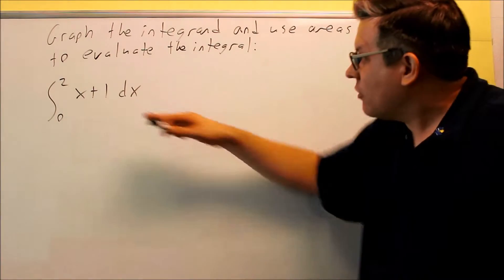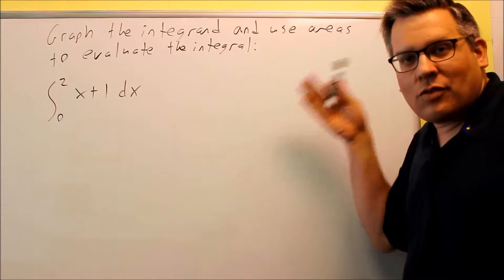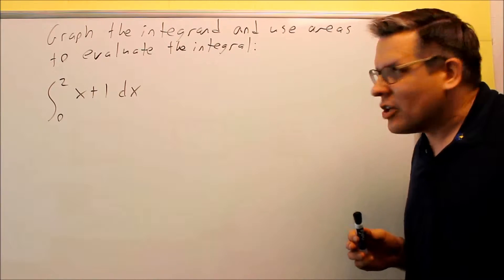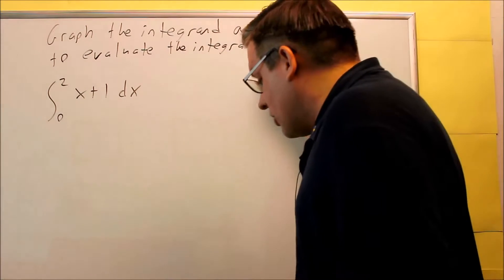Okay, next one, we have another one that's a line. We want to first do the same thing where we want to graph it and then see if there's a geometry formula that applies to that particular problem. We're graphing x plus 1, but we're only going between 0 and 2.